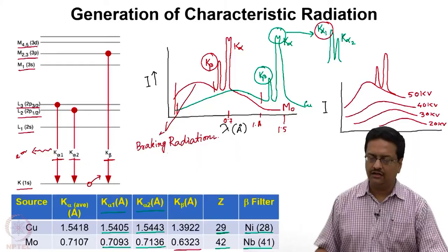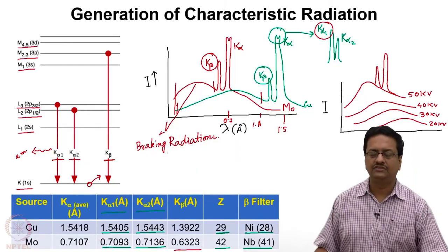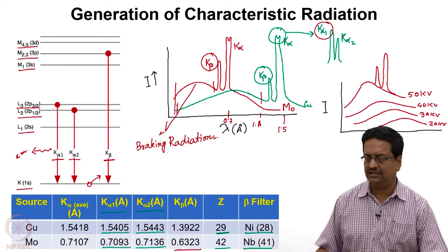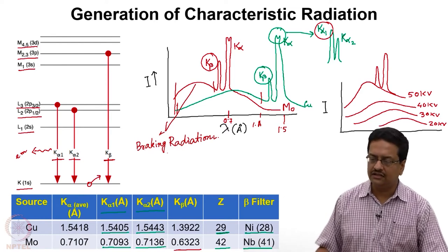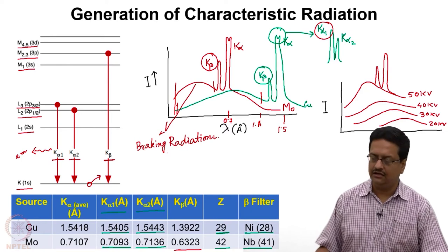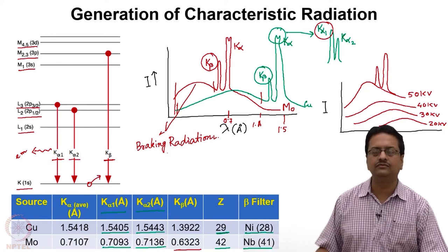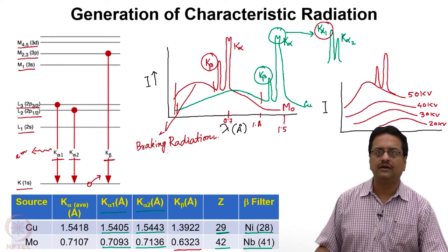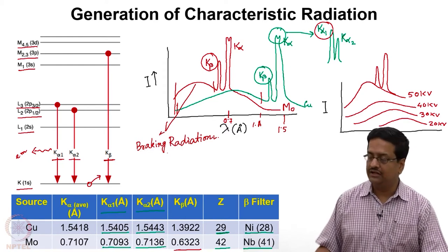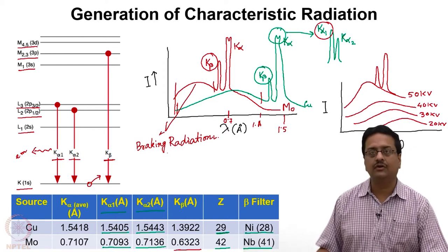Welcome back to the second lecture of this course on chemical crystallography. I am starting this lecture from the slide where we ended the previous lecture, where we discussed how the generation of characteristic radiation is done and how those radiations can be used for our experiments in the laboratory using appropriate filters and monochromators.